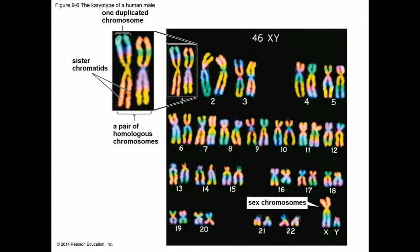Chromosomes in a homologous pair are the same length and shape and carry the same types of genes. The sex chromosomes, which determine the sex of the individual, are called X and Y. Human females have a homologous pair of X chromosomes, so they are XX. Human males have one X and one Y chromosome.